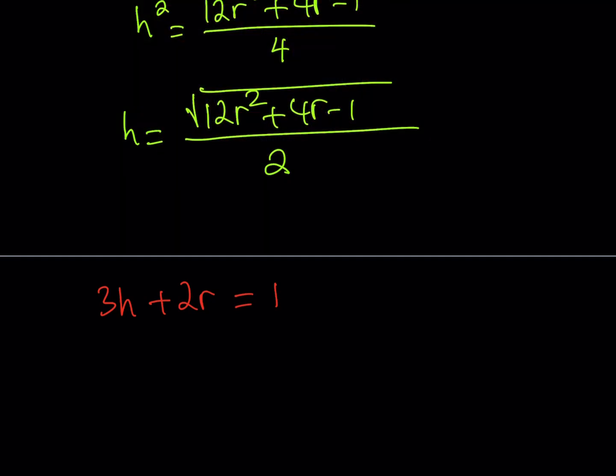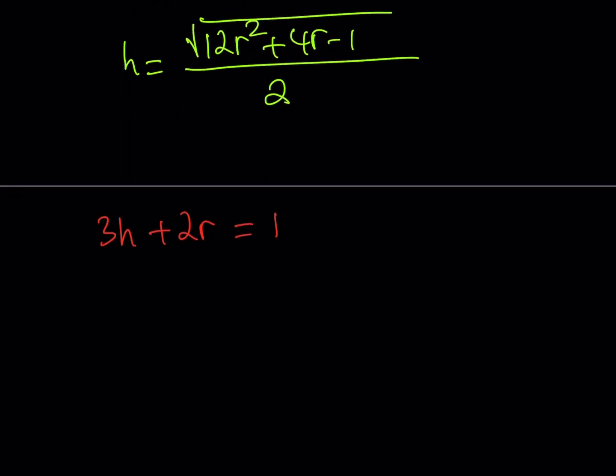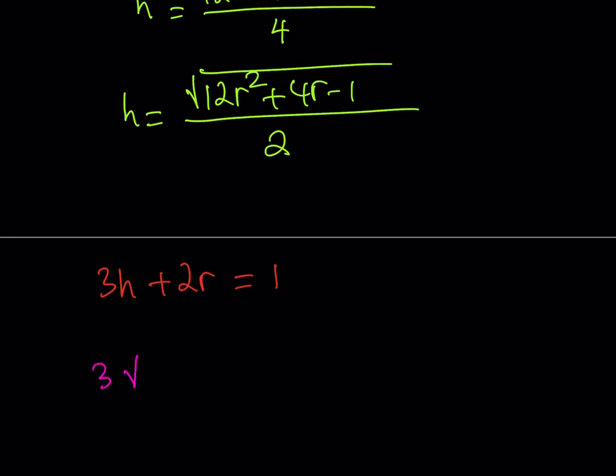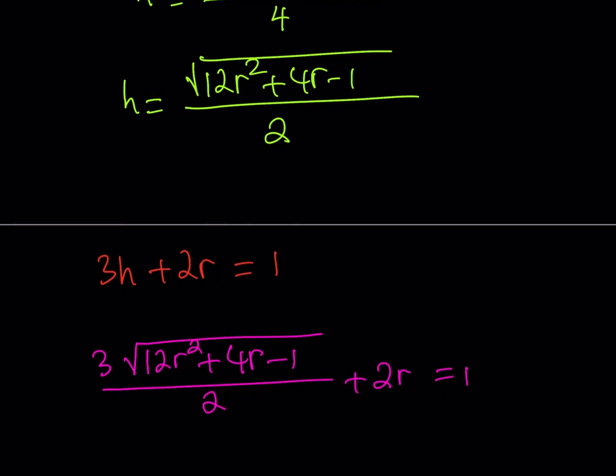So now I can proceed from here. What I need to do is replace H with what it is, and then we can basically go from here. So replace the H with that, the radical expression here. 3 times the square root of 12R squared plus 4R minus 1 divided by 2 plus 2R is equal to 1. So if we can solve this equation, then we can find R. But this is a quadratic. Well, it is going to be turning into a quadratic. So there will be two solutions, and we'll discuss those as well.